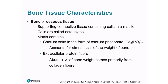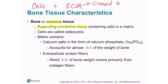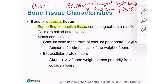You may or may not recall from Module 4.4 that bone tissue, also called osseous tissue, is a supporting connective tissue. Like all connective tissues, bone tissue is made of a sparse number of cells found in an abundant extracellular matrix. The extracellular matrix has two main components: ground substance and protein fibers. Unlike connective tissue proper, which has a wide variety of cell types, there are only a few types of cells found in bone tissue.